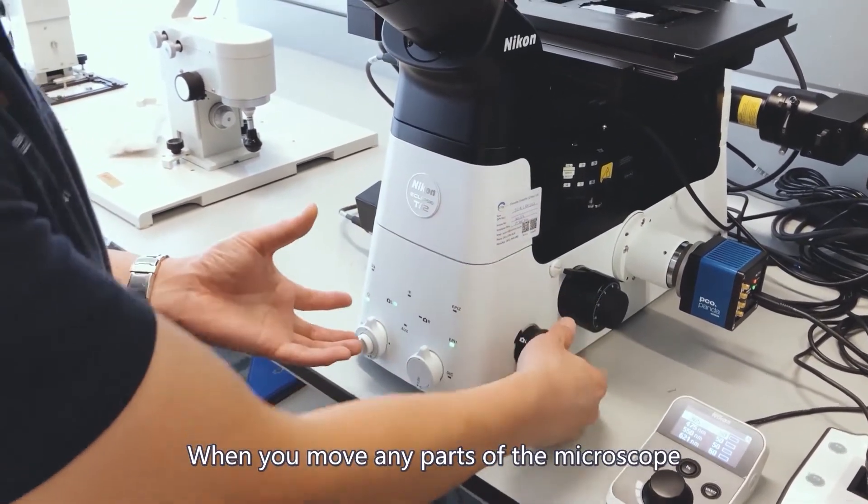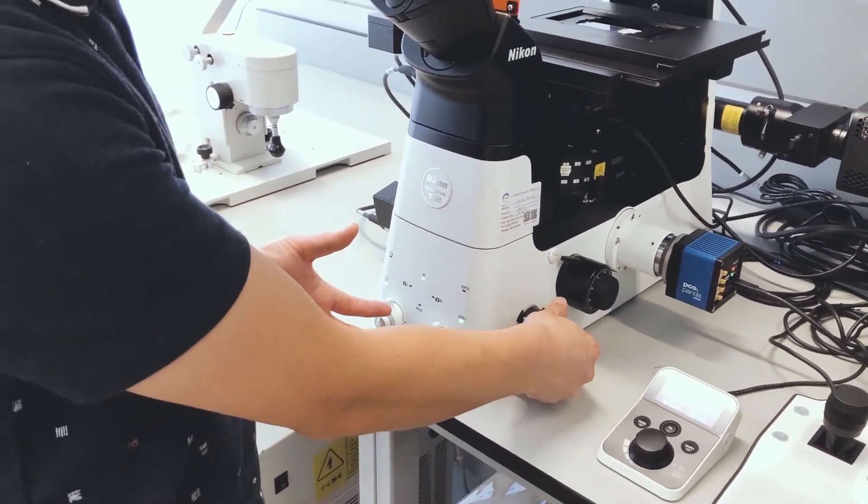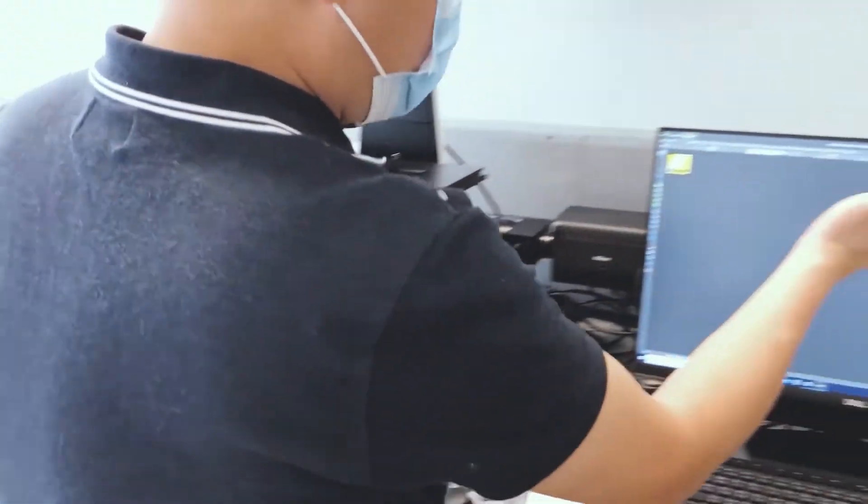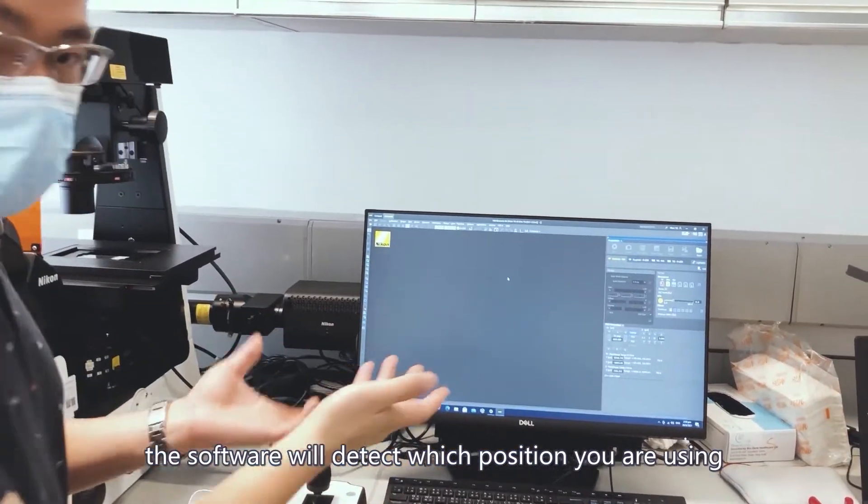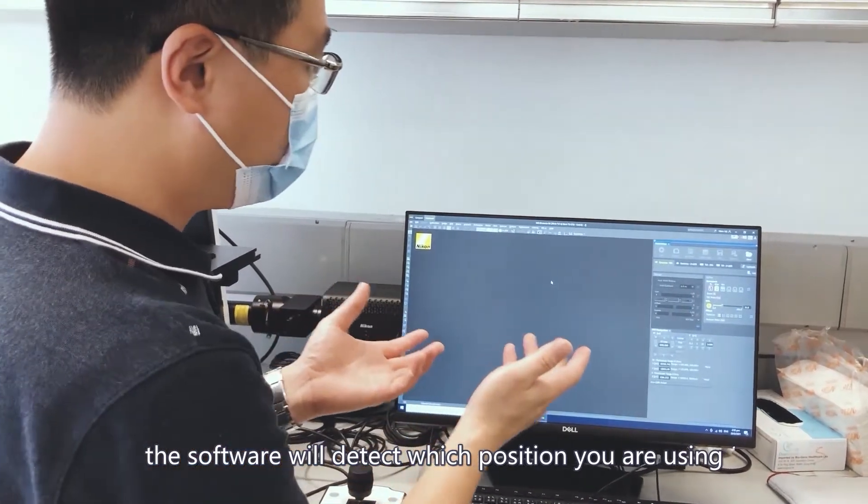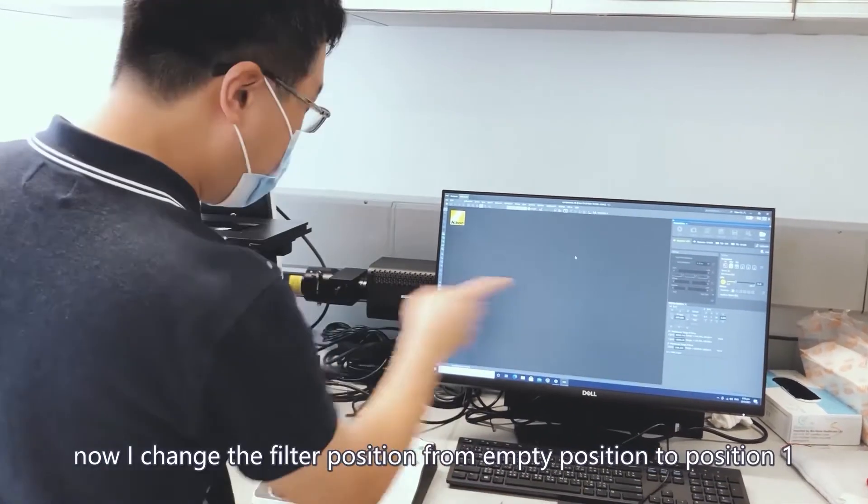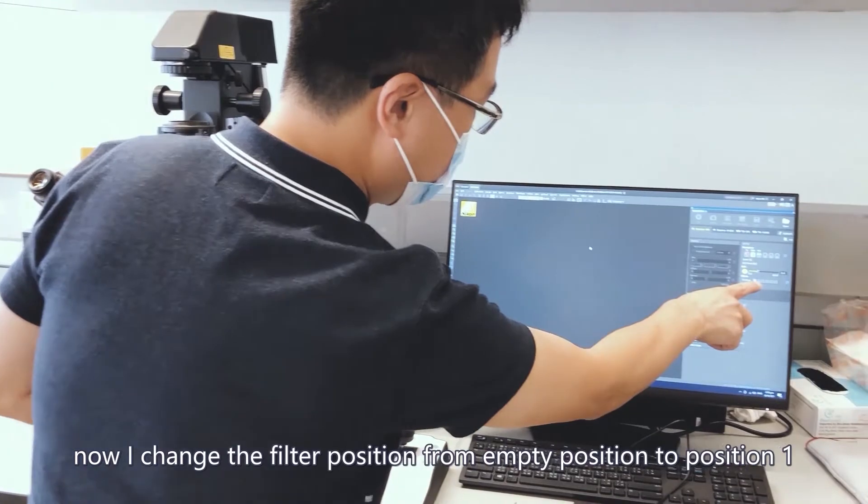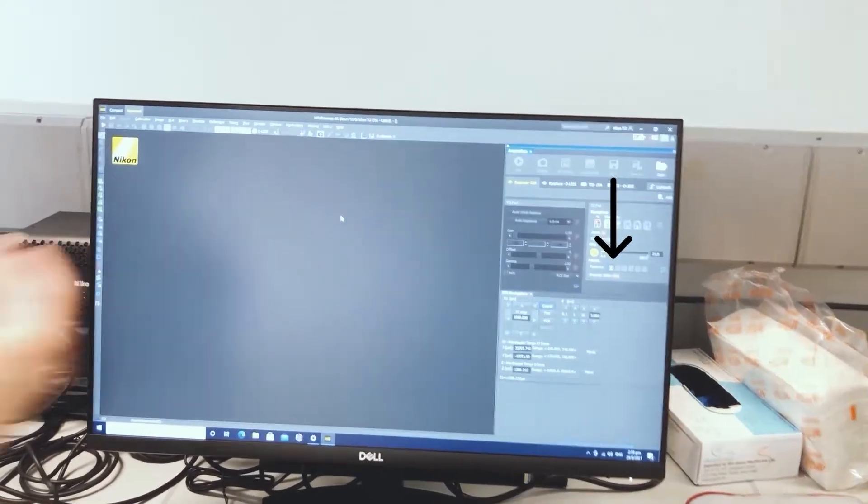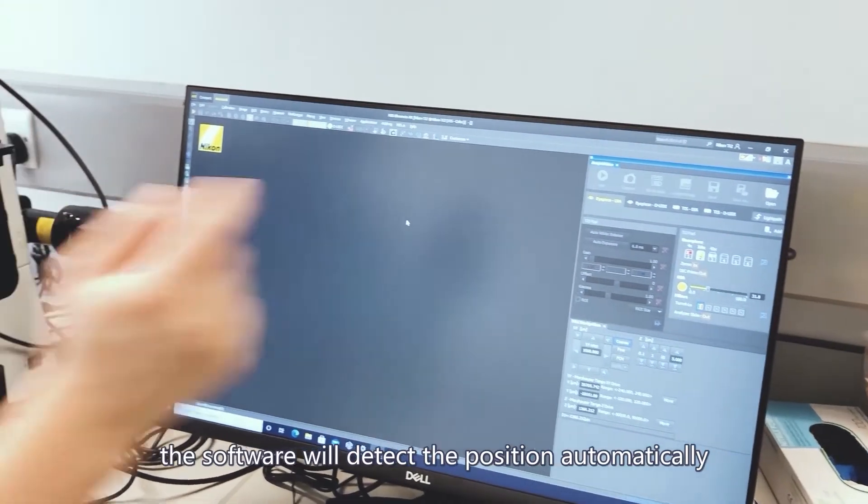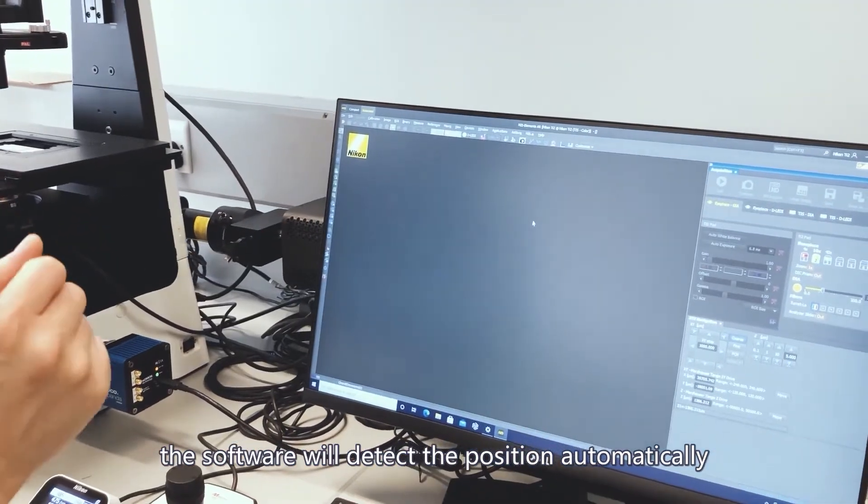But the beautiful thing is, when you move every part of the microscope, the software will detect the position which you are using. For example, now I change the filter position from empty position to filter position 1. The software will detect the position automatically.